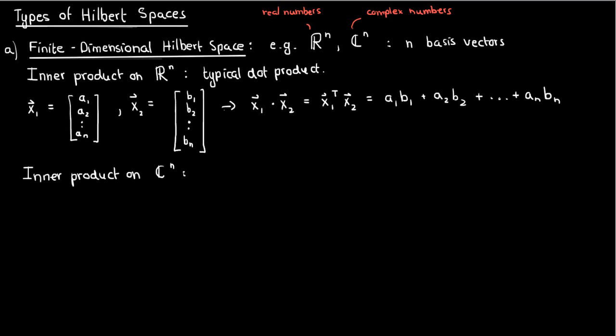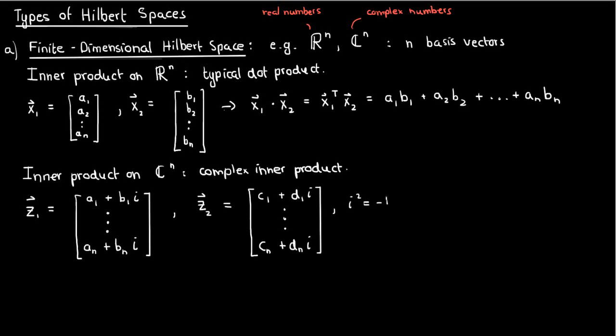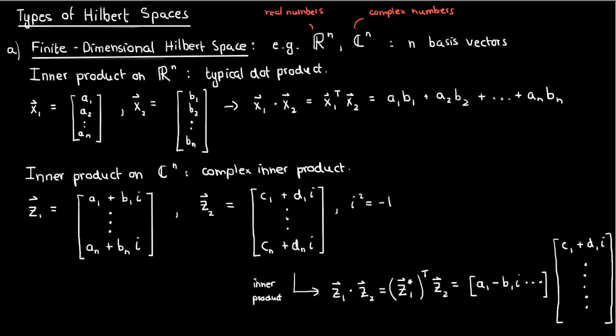The inner product on C^n is the complex inner product, so if we have two vectors z1 and z2, where z1 is a vector consisting of elements from a1 plus b1i to an plus bni, and z2 is another vector consisting of elements from c1 plus d1i to cn plus dni, where i squared equals negative 1 is the imaginary number, then their inner product is very similar to the inner product for real numbers except instead of just the transpose of the first vector, we're using the conjugate transpose. That is, we're taking the conjugate of every element in z1 and then the transpose of the resulting conjugate vector.